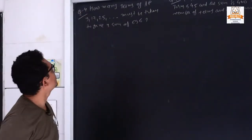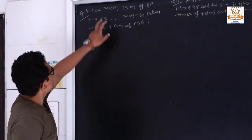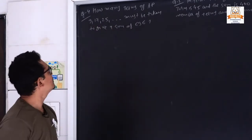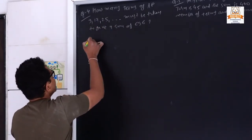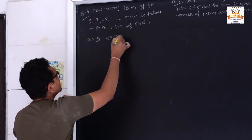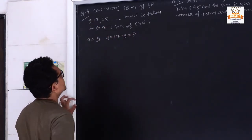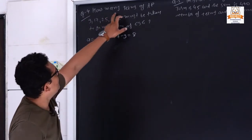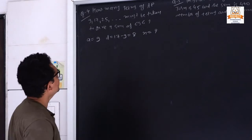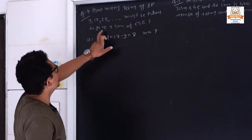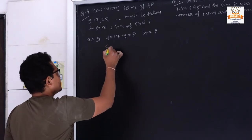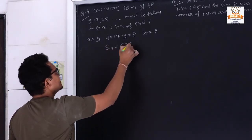Question number 4: How many terms of an arithmetic progression series must be taken to give a sum of 636? From the series, the first term a is equal to 9, then d = 17 minus 9, so it is 8. We want to find out the value of n, and Sn is also given as 636.